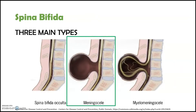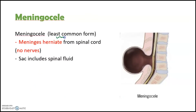Now let's look at meningocele, which is a type of spina bifida cystica. From the name, you can note that it has something to do with the cyst. Meningocele is the least common form of spina bifida. In this type, the developmental defect allows the meninges to protrude from between the vertebrae and form a sac. However, the nerves of the spinal cord remain intact. As the name suggests, it is the meninges that herniate, but not the nerves.